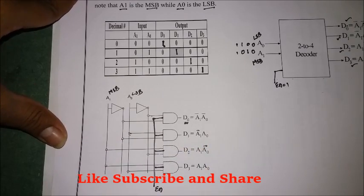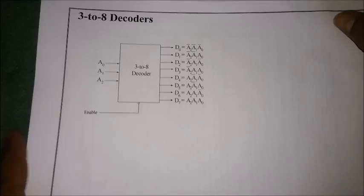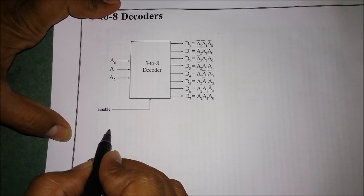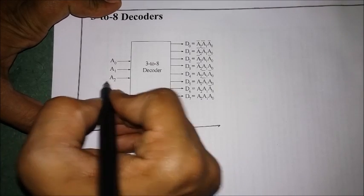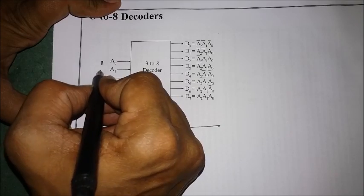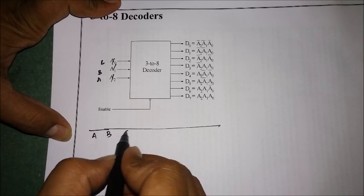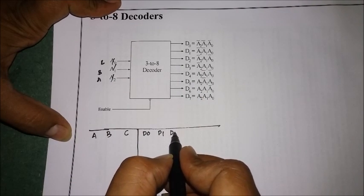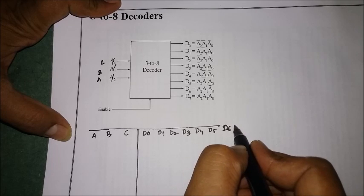Now let us look at the 3-to-8 line decoder. From the figure, we can see it has three inputs and eight outputs. The truth table for this is somewhat large. Let us take inputs A, B, and C, and instead of writing it in a confusing manner, we will list the outputs as D0 through D7.